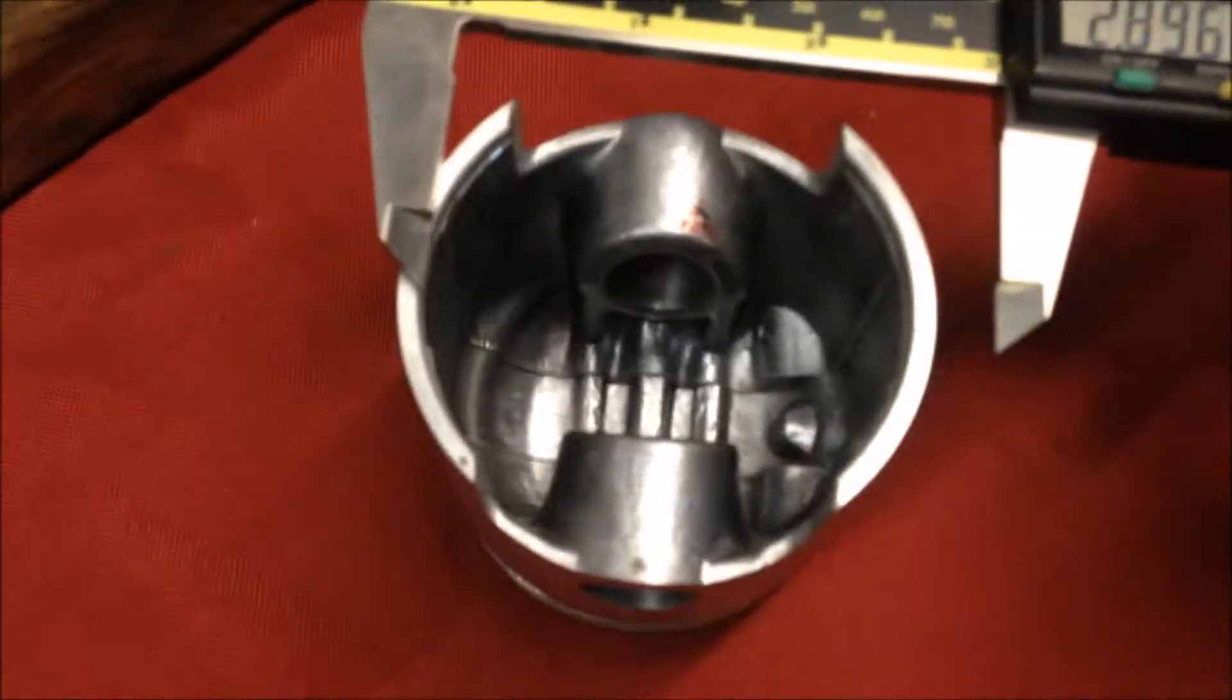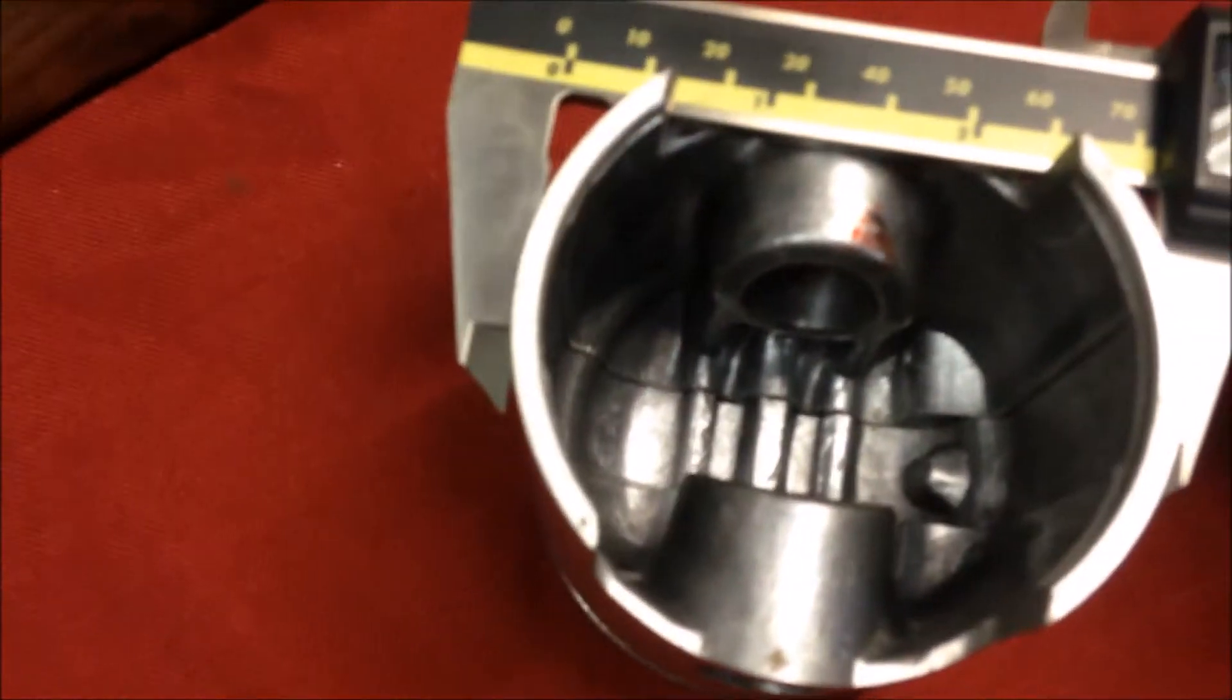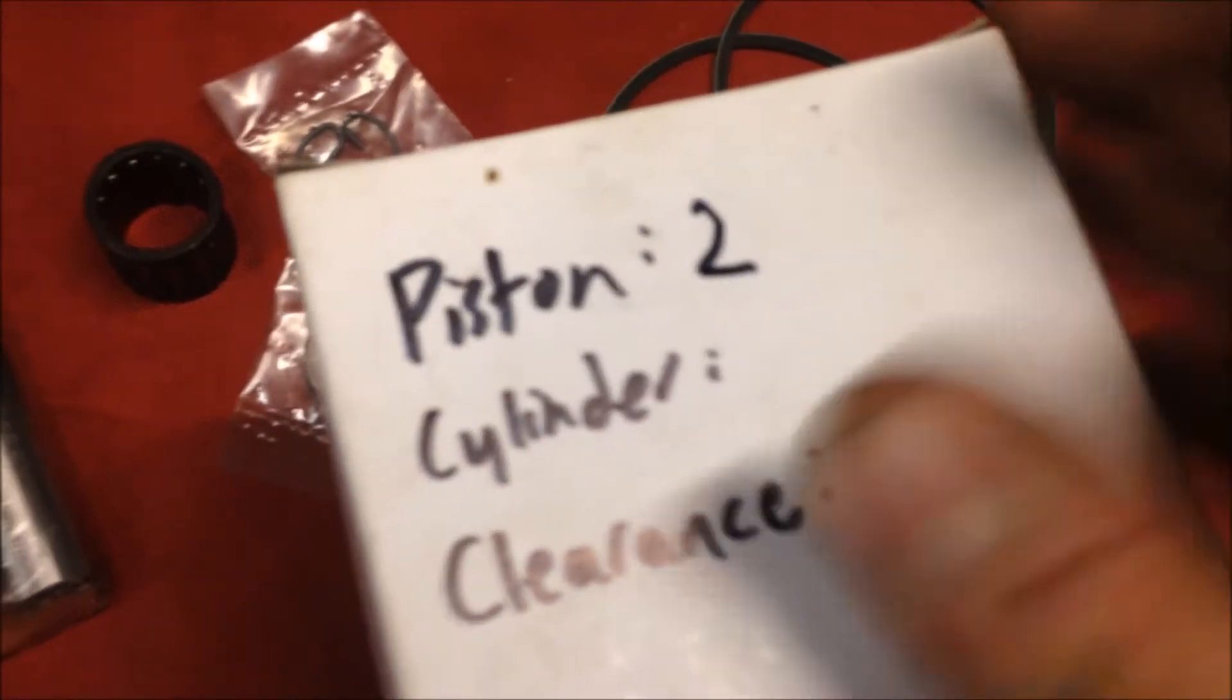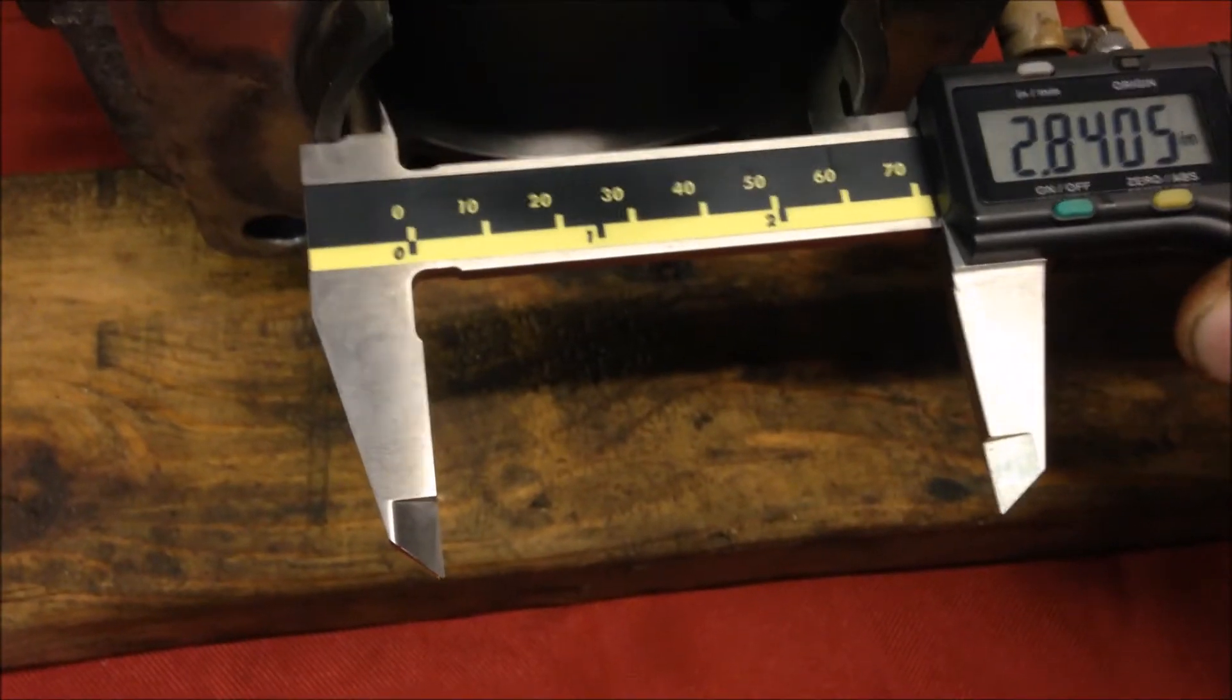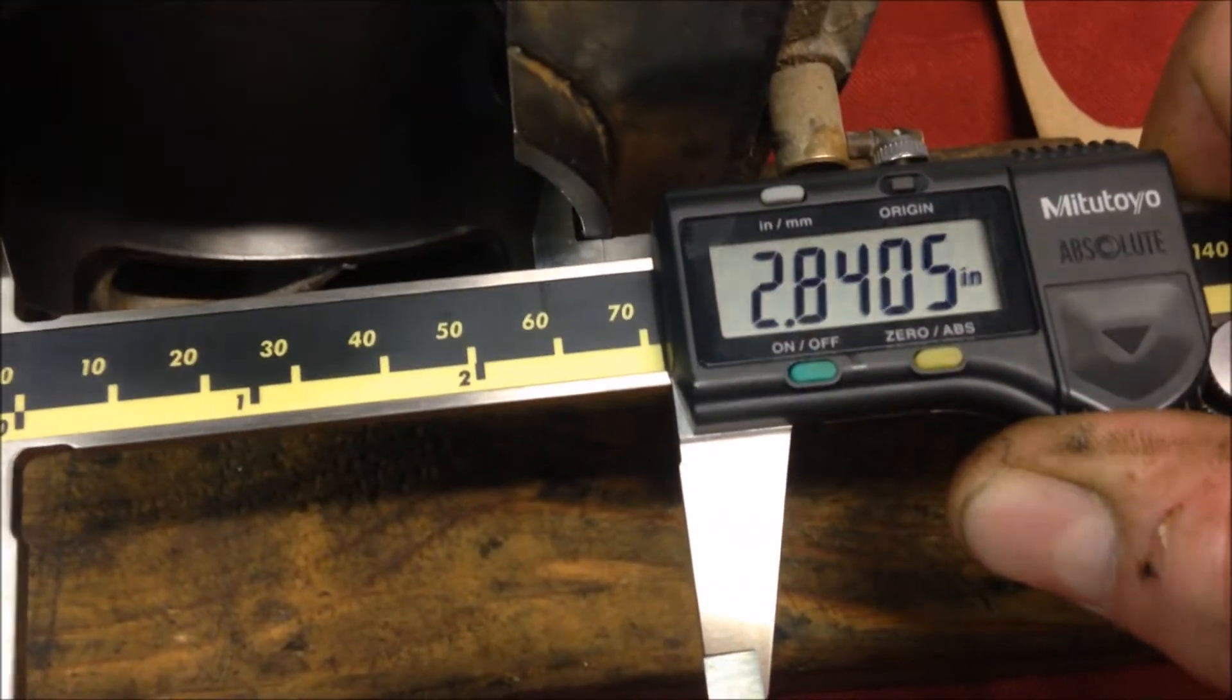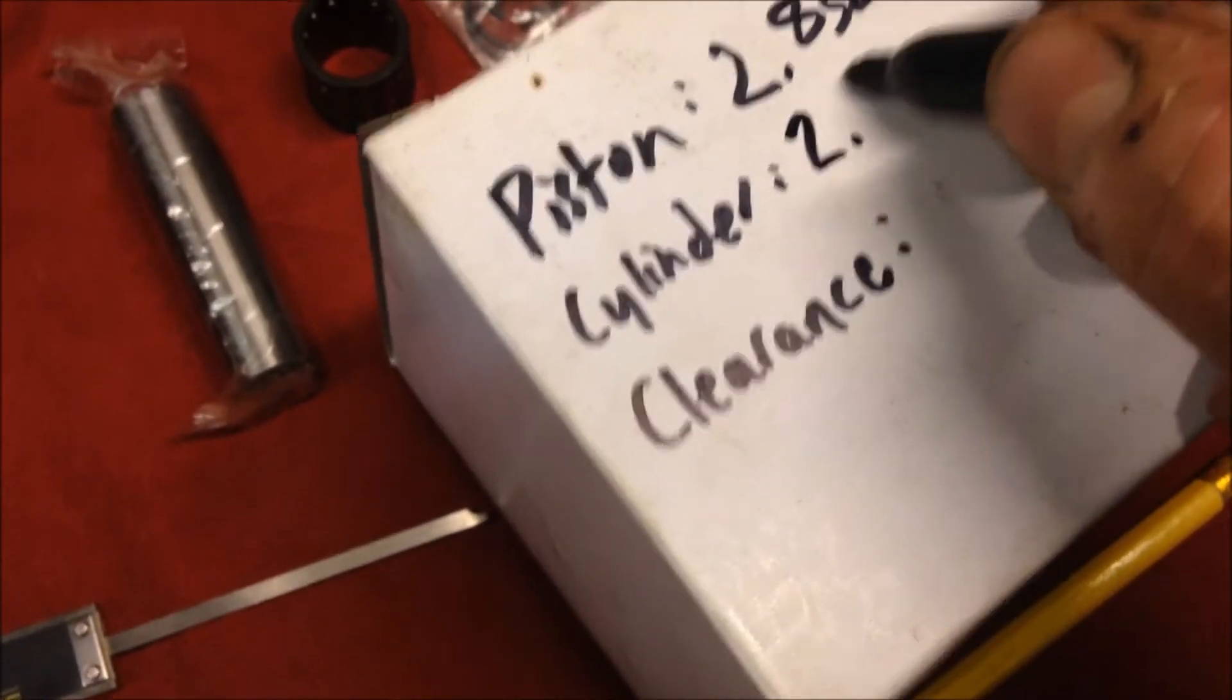I have the cylinder work done at a third party, so I'll just give it a rough check. You want to check your piston three-eighths down from the bottom. The measurement we get here is 2.838. You want to write that down for your piston diameter: 2.838.